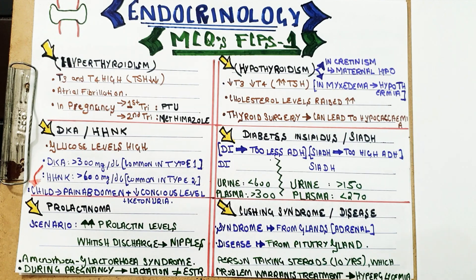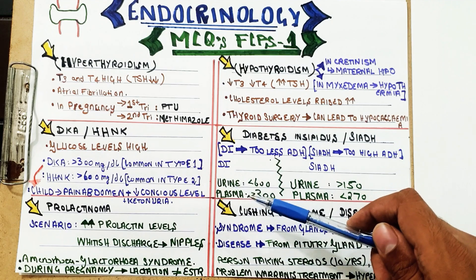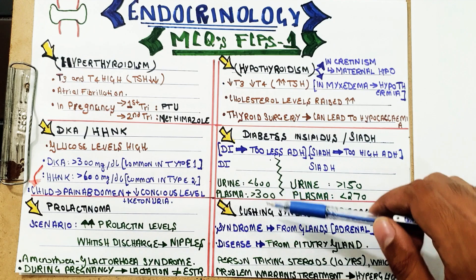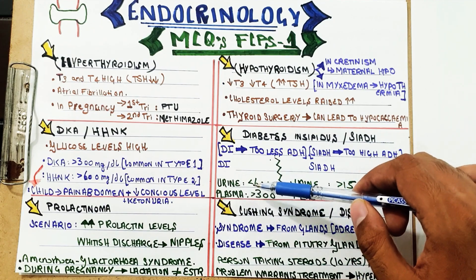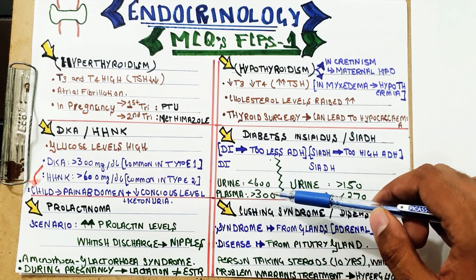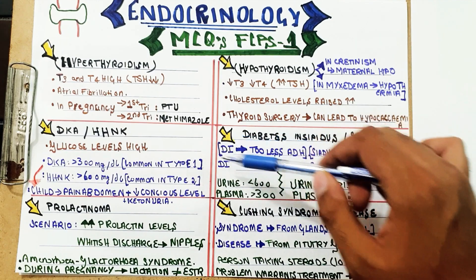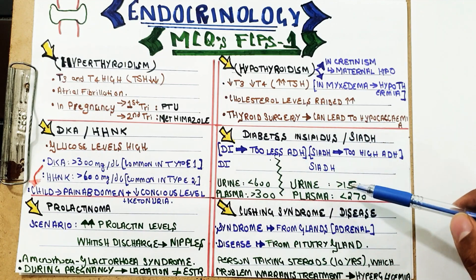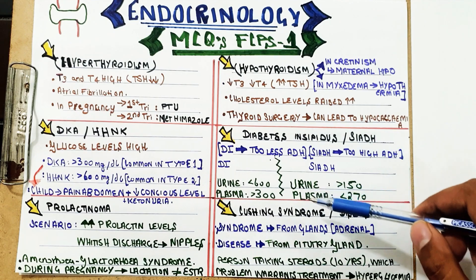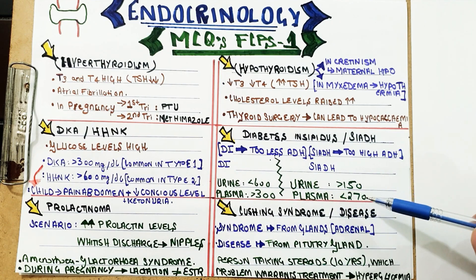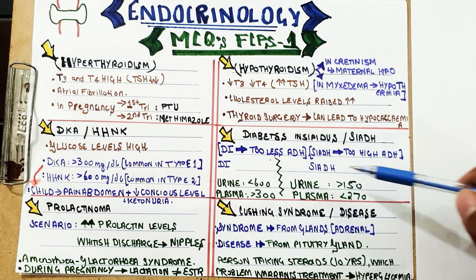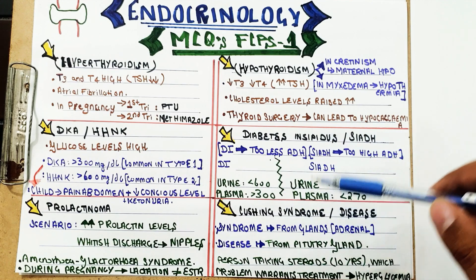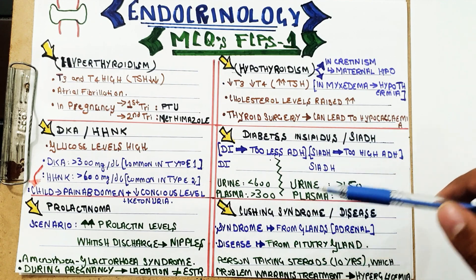For osmolality differentiation: urine osmolality of around 600 and plasma osmolality of around 300 indicates diabetes insipidus. But if urine osmolality is greater than 150 and plasma osmolality is less than 270, that combination points to SIADH. This simple rule helps you easily identify which scenario is being described.